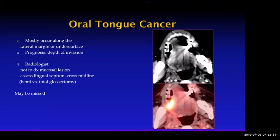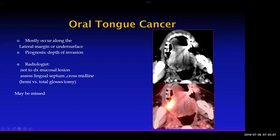Oral tongue cancer — the most classic location is the lateral margin or the ventral (undersurface) of the tongue. Prognosis depends on depth of invasion. The radiologist's job is not to diagnose the mucosal lesion — the ENT surgeon can see that well. What they're looking for is: is it involving the lingual septum? Is it crossing the midline? Is it going to the floor of mouth? Is there bone invasion? All of those factors upstage the tumor.